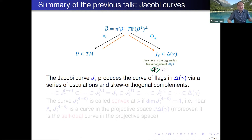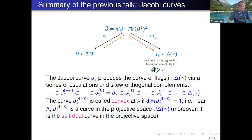The idea is that we can push forward the lift: we start with the distribution, lift it upstairs, then project via the second projection to the leaf space. In the leaf space we have a special structure — a contact distribution together with, on each fiber, a curve in the Lagrange Grassmannian, specifically a self-dual curve. Then by a series of osculations and skew-orthogonal complements we can produce what I call an osculating flag.